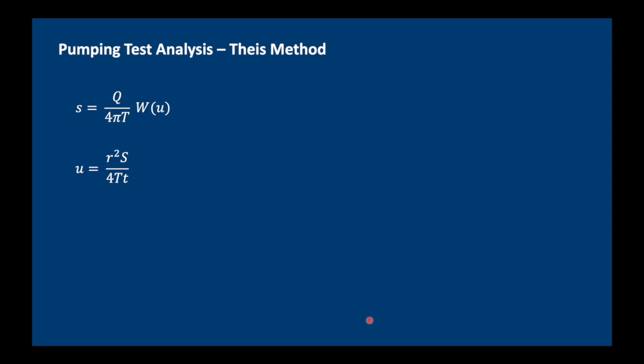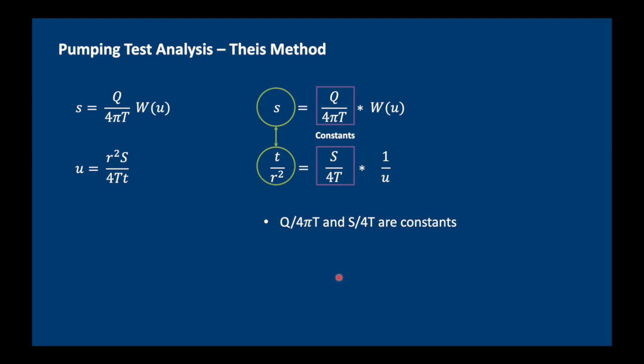Let's have a closer look at the Theis equation. We can rewrite the equation for u in this way so that t over r squared is on one side of the equation and the rest on the other side. And what you'll notice here is that Q over 4 pi T is a constant and also S over 4 T is a constant. Because these things don't change during the course of a pumping test. That assumes of course that you pump at a constant rate.